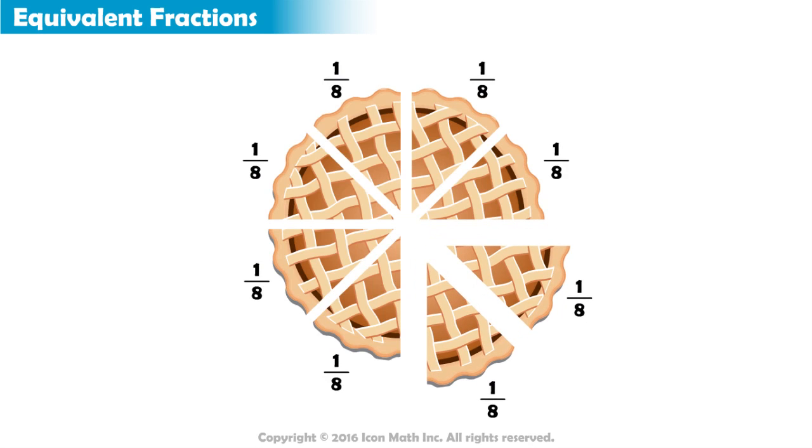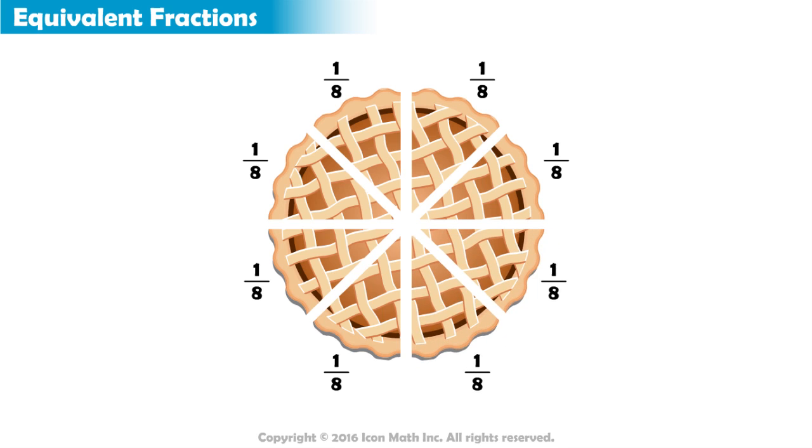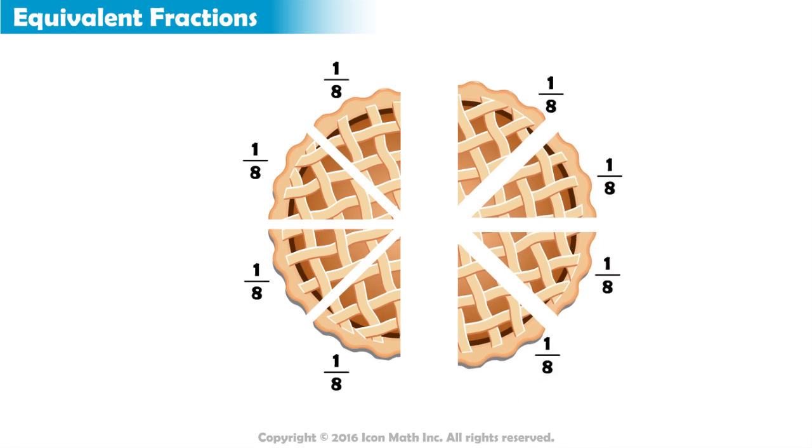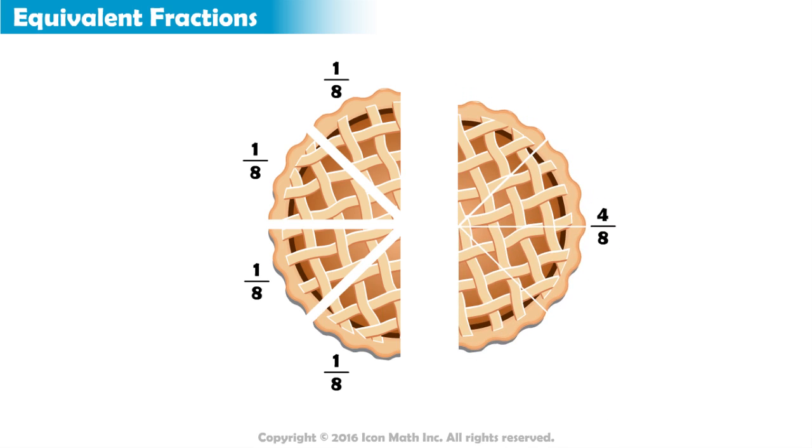Putting together two equal pieces of the pie is the same as combining two copies of 1 eighth, and this would give us the fraction 2 eighths. How about joining together four equal pieces of the pie? Since every piece is 1 eighth, joining four equal pieces means combining four copies of 1 eighth. And this would give us 4 eighths.